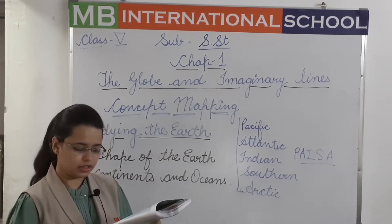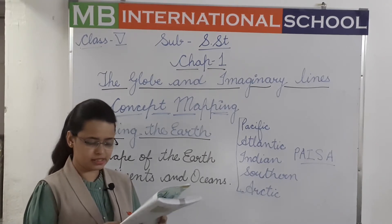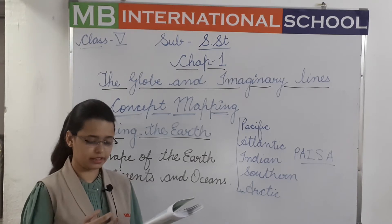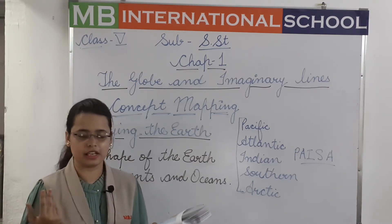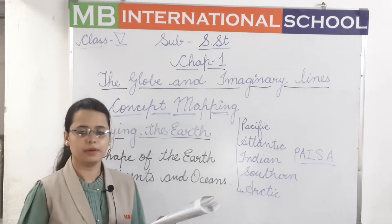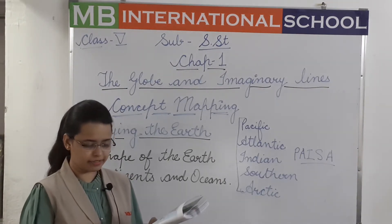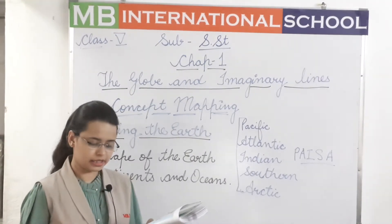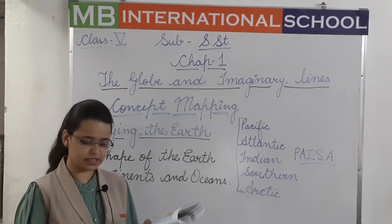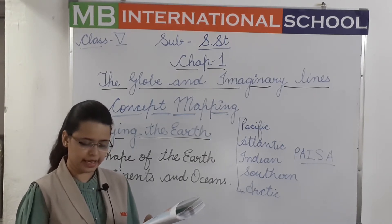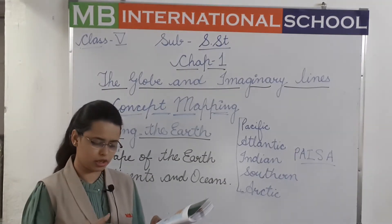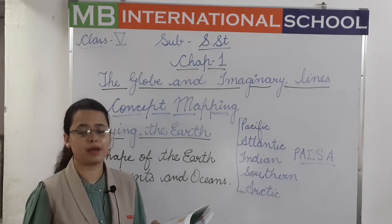Besides oceans, the earth also has many small water bodies such as seas, gulfs, rivers, and bays. The earth also has a variety of landforms like mountains, plains, and plateaus. In order to see the distribution of continents and oceans on the earth, we take help of globes and maps. The maps chapter we will read in the next chapter.